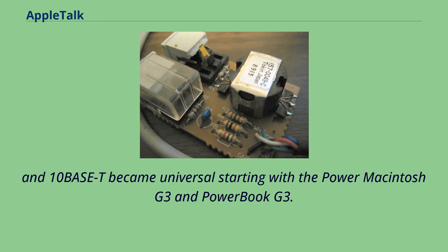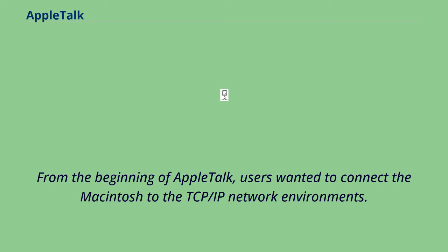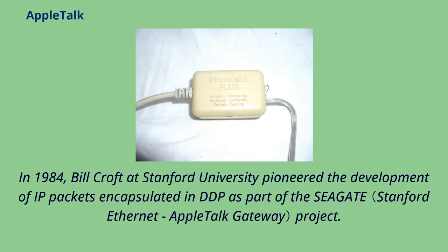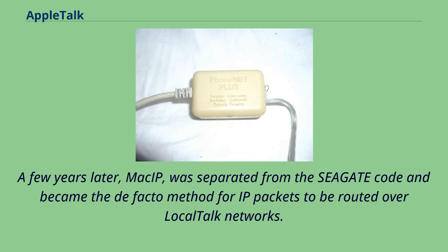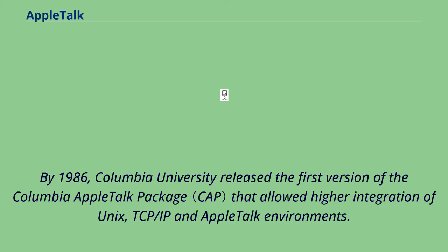From the beginning of AppleTalk, users wanted to connect the Macintosh to TCP/IP network environments. In 1984, Bill Croft at Stanford University pioneered the development of IP packets encapsulated in DDP as part of the Seagate project. Seagate was commercialized by Kinetics in their LocalTalk-to-Ethernet bridge as an additional routing option. MacIP was later separated from the Seagate code and became the de facto method for IP packets to be routed over LocalTalk networks. By 1986, Columbia University released the first version of the Columbia AppleTalk package, allowing higher integration of Unix, TCP/IP, and AppleTalk environments.